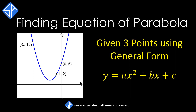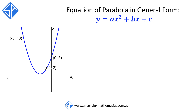In this video, we're going to look at another method for finding the equation of a parabola when we're given three points, using general form. Another way to find the equation of the parabola is using the general form y is equal to ax squared plus bx plus c. This form is useful when we're given three points on the parabola, and what we do is simply substitute each coordinate into the general form in order to obtain three simultaneous equations, which we can then solve for the values of a, b, and c.